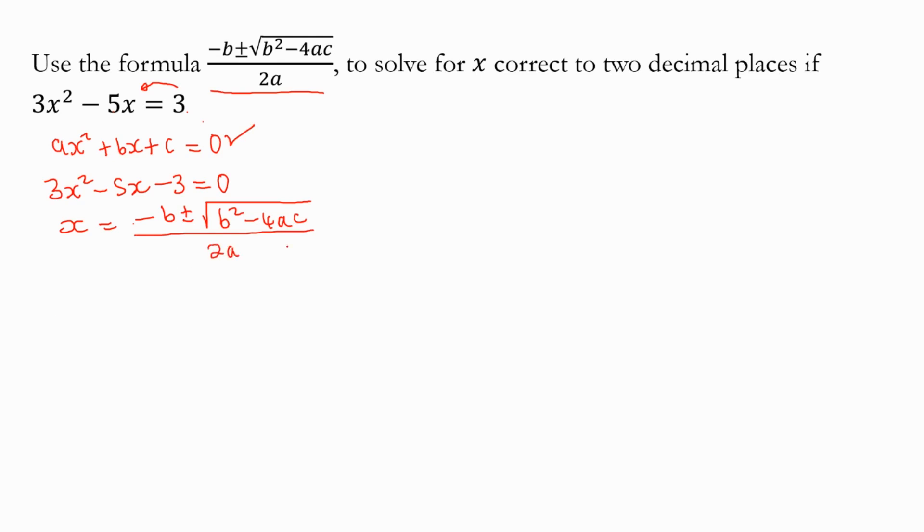You can list your a, b, and c. So a is equal to 3, please take note of the signs there. And b is equal to negative 5, not 5, negative 5. You see negative 5? And then c is equal to negative 3.